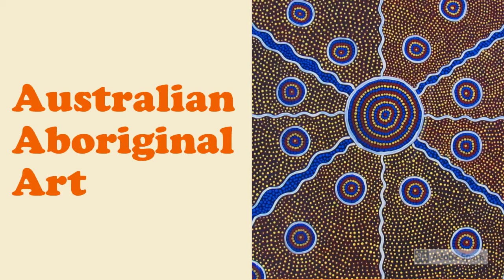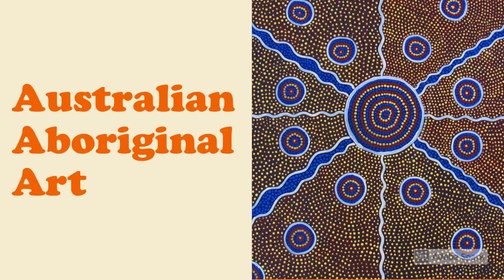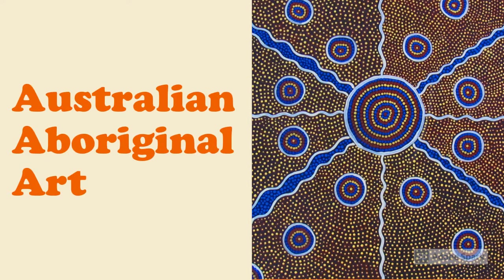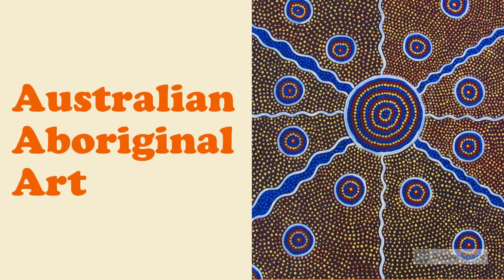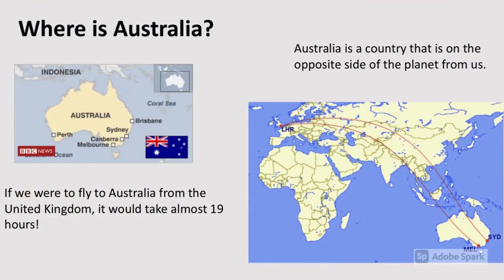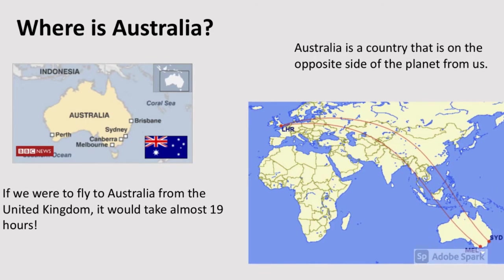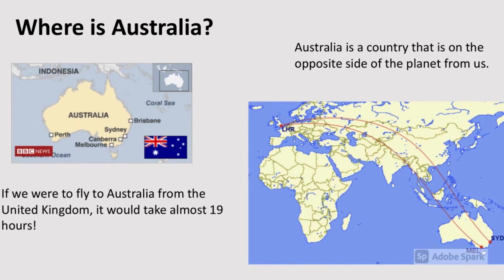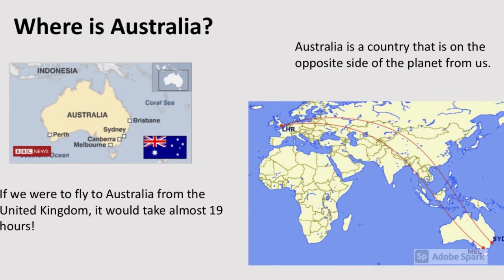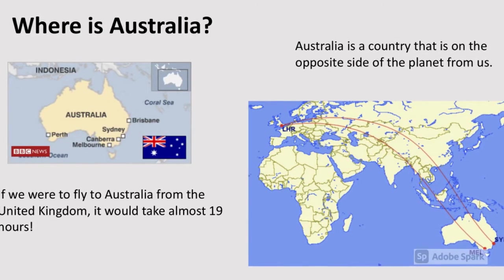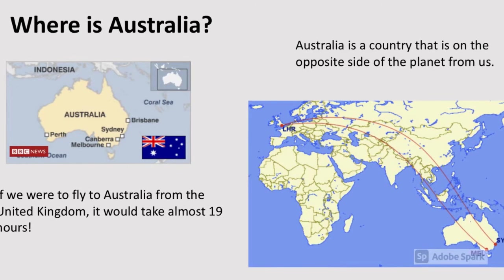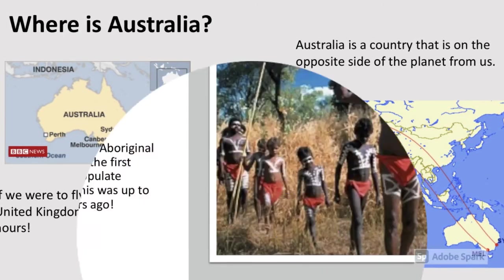This week I'm using Adobe Spark to teach you a lesson about Australian Aboriginal art. Where is Australia? Australia is a country that's on the opposite side of the planet from us. It's in the bottom right hand side of our map. If we were to fly to Australia from the United Kingdom it would take almost 19 hours — that's the best part of a day.